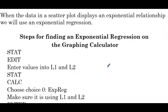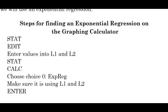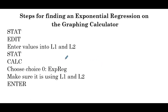So how are we going to find an exponential regression? When the data in a scatter plot displays an exponential relationship, we will use an exponential regression. The steps for finding an exponential regression on the graphing calculator are identical to the linear regression except for one step: we're going to choose choice 0, which is exponential regression, opposed to linear regression. Everything else follows the same way.